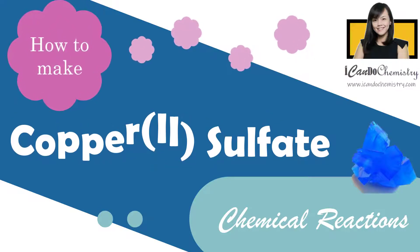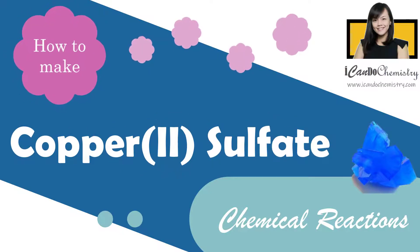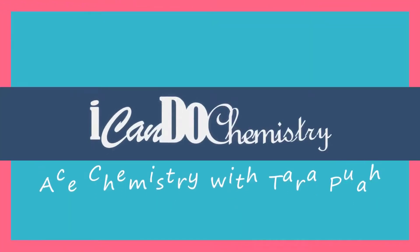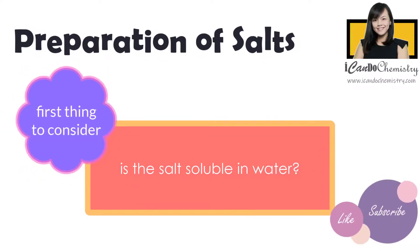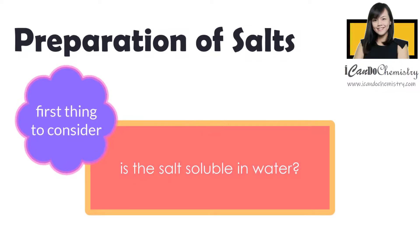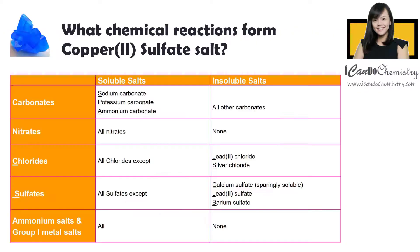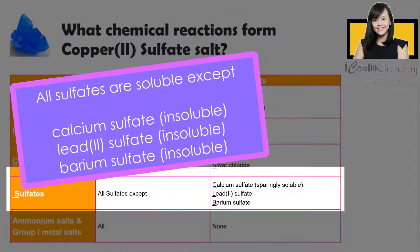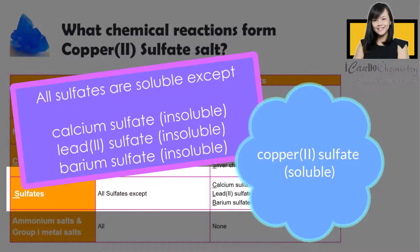In this video, we will work out the chemical reactions to prepare copper 2 sulfate salt. When we prepare any salt, the first thing we need to consider is whether it is soluble in water. The salt we are focusing on in this video is copper 2 sulfate. For sulfates, we know all are soluble except calcium sulfate, lead 2 sulfate, and barium sulfate. Hence, copper 2 sulfate is a soluble salt in water.